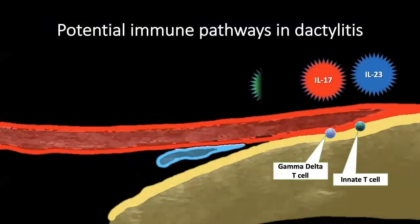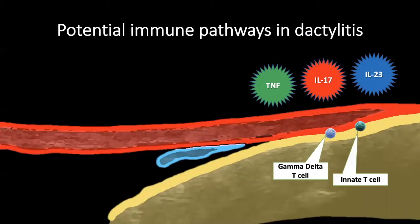Regarding immune pathogenesis, at the tendon and entheseal attachments, there are subsets of inactive T lymphocytes — particularly gamma-delta T cells and undifferentiated T cells. In predisposed patients with positive HLA or other risk factors for psoriatic arthritis, these cells are very sensitive to mechanical loads. Under mechanical loads, they secrete IL-23 and IL-17, activating the inflammatory pathway and leading to production of TNF-alpha and IL-22, resulting in the full picture of digital inflammation — dactylitis. So a mechanical force is transmitted into a biological response through inflammatory cytokines including TNF-alpha, IL-6, and IL-23.